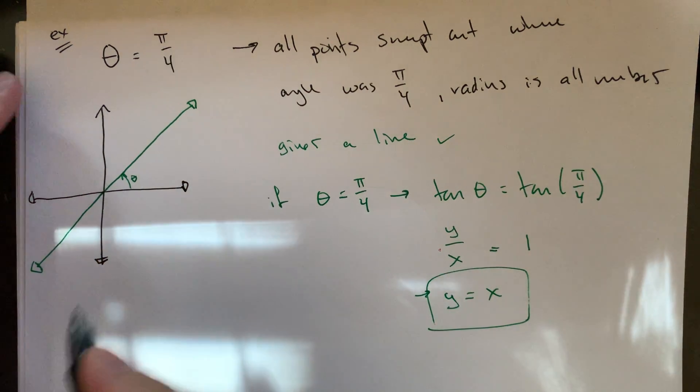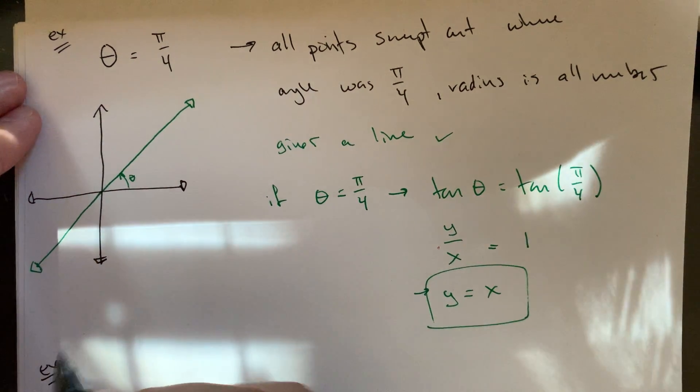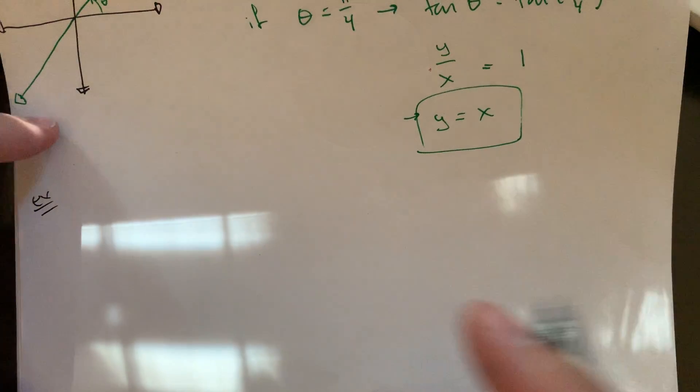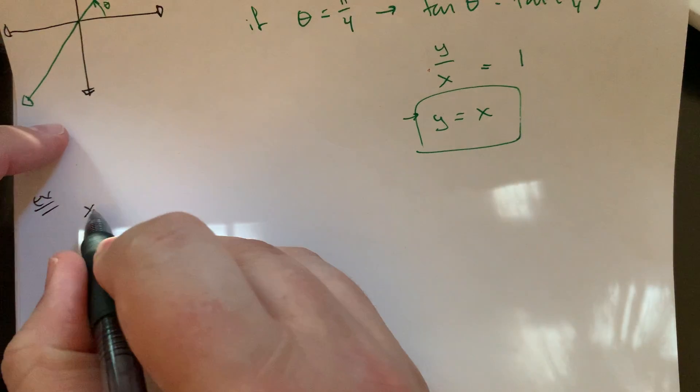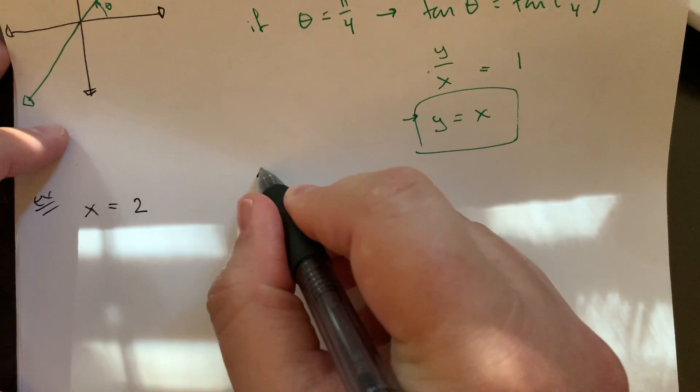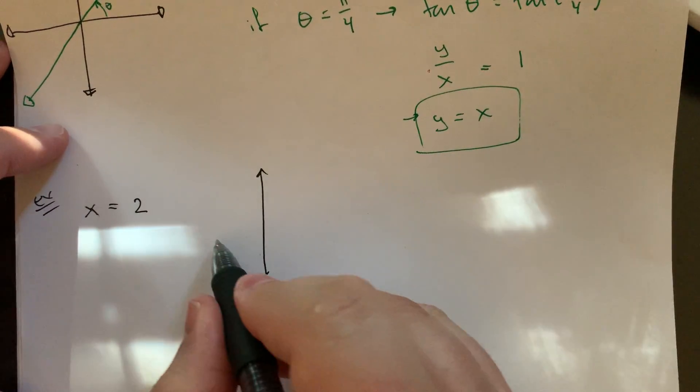Going the other direction, you could also do conversions from kind of simple rectangular equations. I want to look at something just like x equals two. So that's supposed to be vertical line.